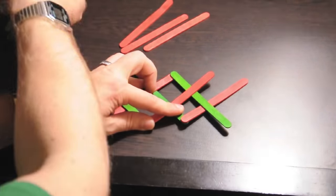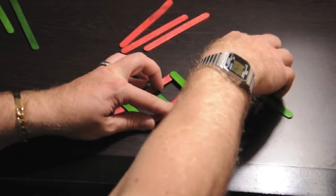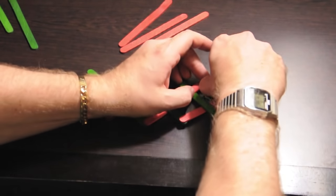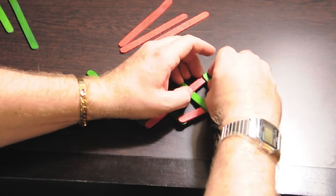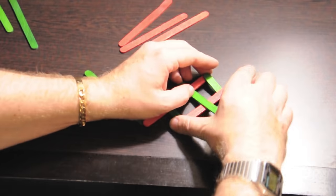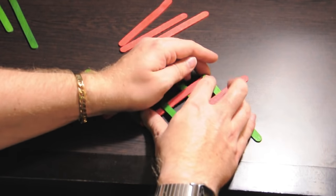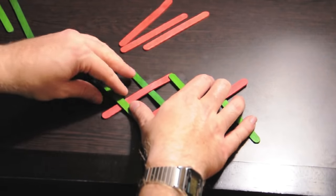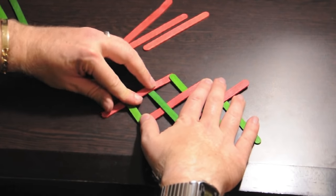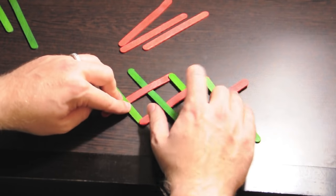Then the next green stick, again, under—let me shift my hands—and over. Keeping the boxes very well proportioned, keeping yourself regimented, is going to make this a whole lot easier as you progress. Because the rhythm of it and being precise with the proportions is going to help.